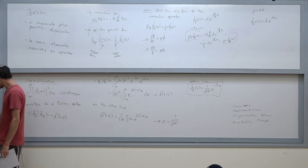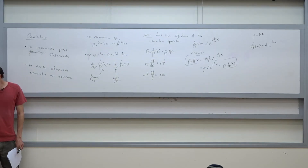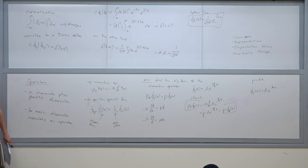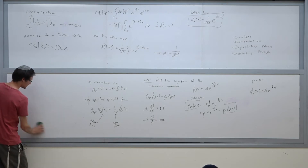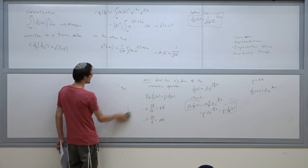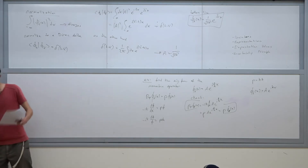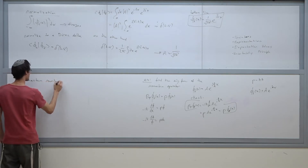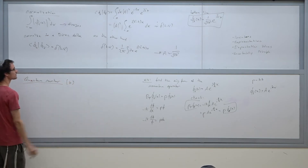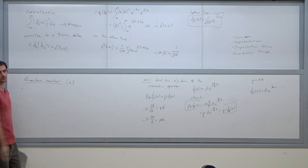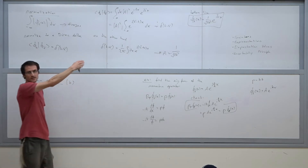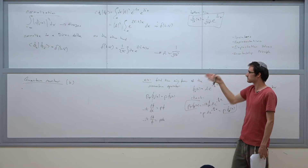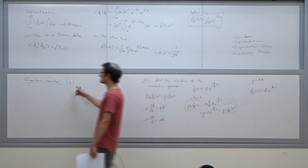Let's talk about the subscript k. The k is what we call the quantum number. It tells us which eigenfunction we're talking about — plug in a different k and you get a different function, a different spatial frequency. The k is like the spatial frequency — it's like the real part of the cosine. So different k means a different frequency, and the quantum number tells us which eigenfunction we're dealing with.